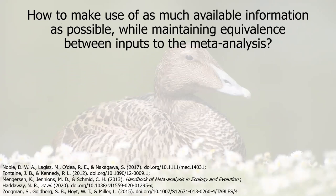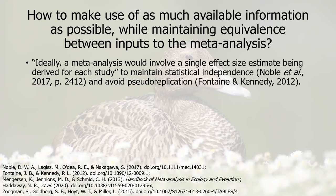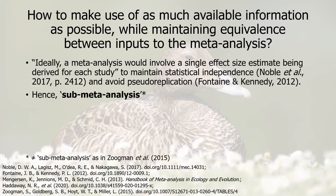Our question was how to make use of as much available information as possible while maintaining equivalence between inputs to the meta-analysis. It has been stated that ideally a meta-analysis involves a single effect size estimate being derived for each study in order to maintain independence and to avoid pseudo-replication. In our case this is a mean rather than an effect size, but the case stands. Where possible, we decided to apply our overarching meta-analysis methodology to each such case as a sub-meta-analysis, ensuring that the overall meta-analysis is then conducted on independent replicated observations per study.